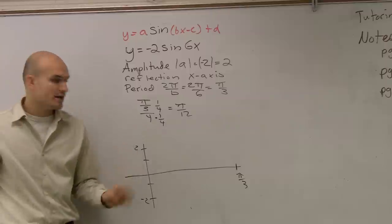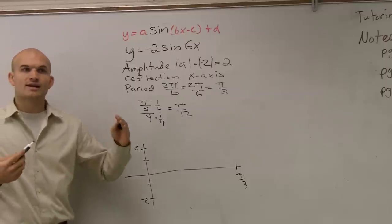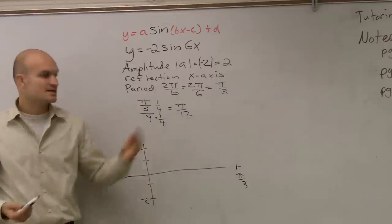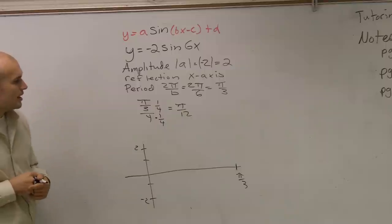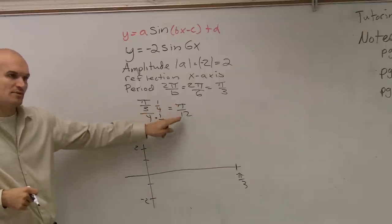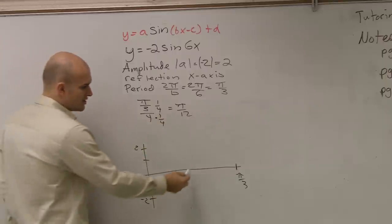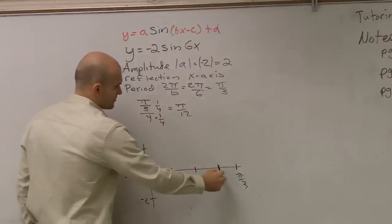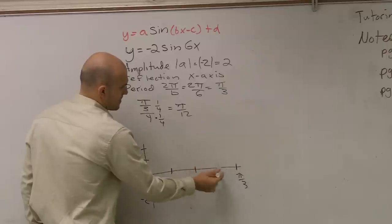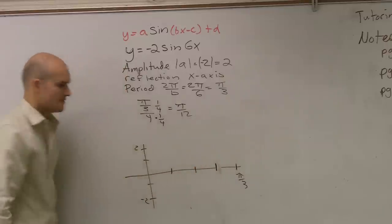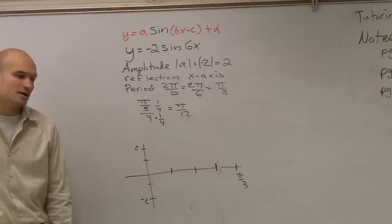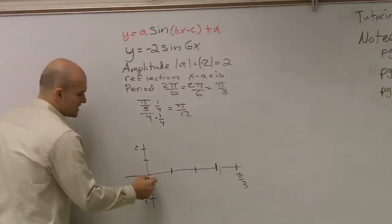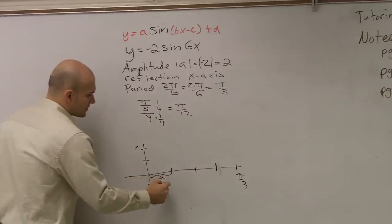The period is going to tell you how long it takes your graph to complete one cycle. Okay? So, what it's going to take for your graph to get to one cycle then? Because after one cycle, it just keeps on repeating itself over and over. So, we have that. And then I said, remember, each important part is pi over 12 between each other. So, what we're going to do is we're going to split our period up into four equal parts.